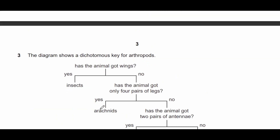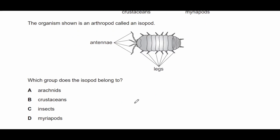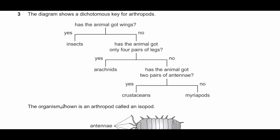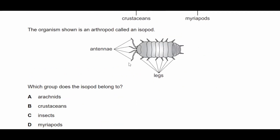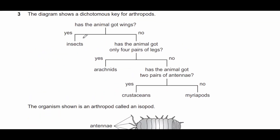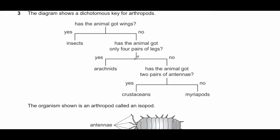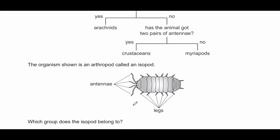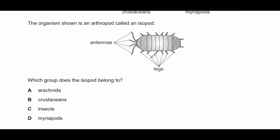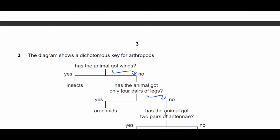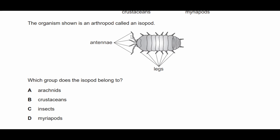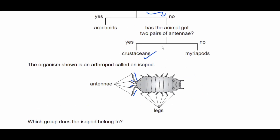Question three: the diagram shows a dichotomous key for arthropods. The organism shown is an isopod. Which group does this isopod belong to? First, has the animal got wings? No, so we go this way. Has it got only four pairs of legs? No, it has more. Has it got two pairs of antennae? Yes — one longer pair and one smaller pair. Therefore it's a crustacean, so the answer is B.